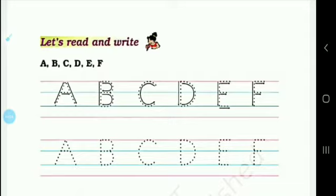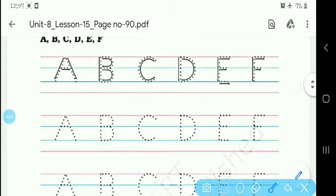So you have to read and write these letters. First of all, the letters are A, B, C, D, E, F. Okay? So you have to trace these letters in four line copy.